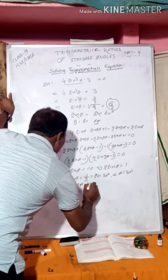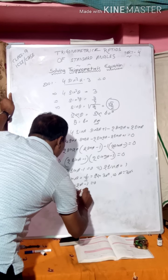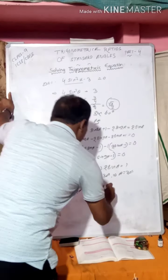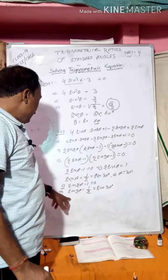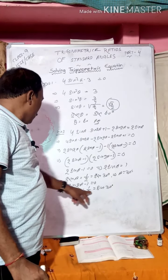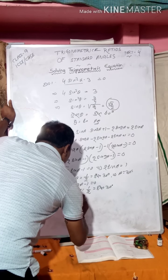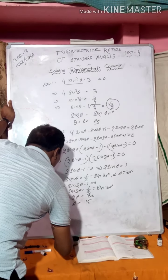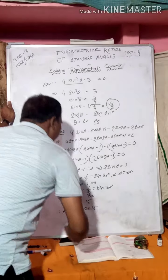Now the second factor: 2sin2A - 1 = 0, so sin2A = 1/2. The angle whose sine is 1/2 is 30°, so sin2A = sin30°. Sin cancels, giving 2A = 30°, and A = 15°. The answer is A = 30° or A = 15°.